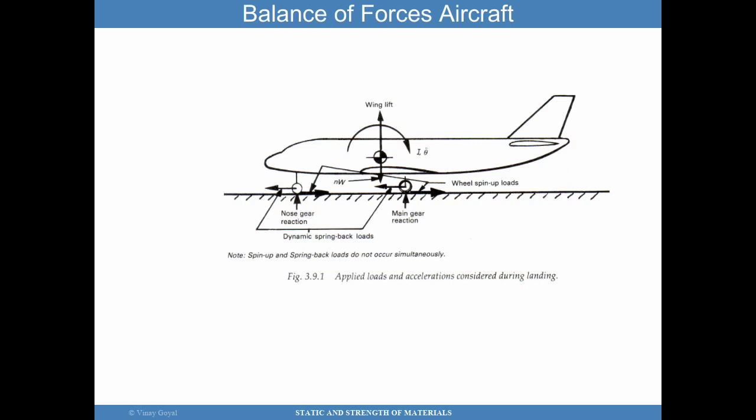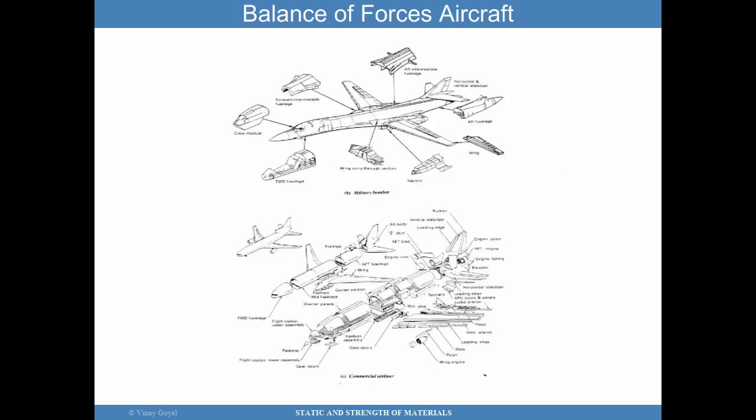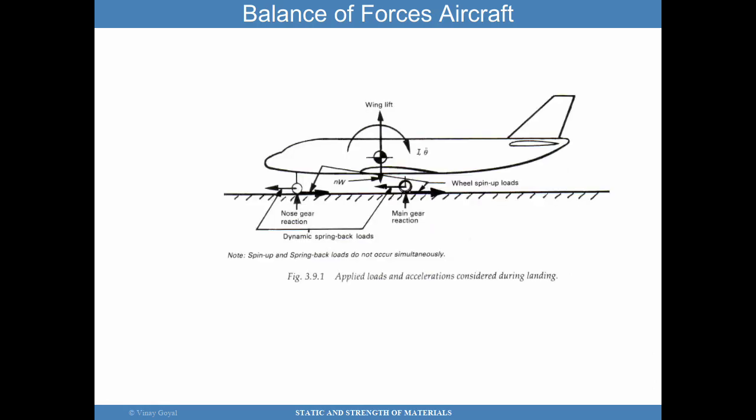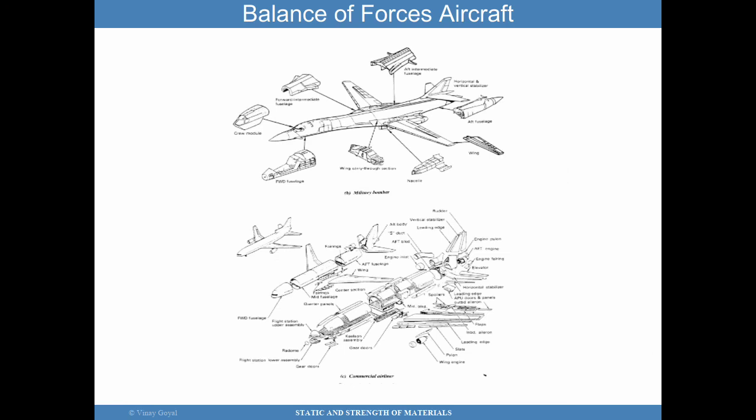Here is an example of an aircraft subject to loading during landing. You have the wing lift, the gear reacting to the ground, and frictional forces. All these loads have to be in balance for the system to be in equilibrium. The forces in the aircraft then get translated to internal loads in the structure, and these are the areas that could fail. Given the loads applied to the structure, we want to determine what the internal loads are and what critical areas must be designed to prevent failure.